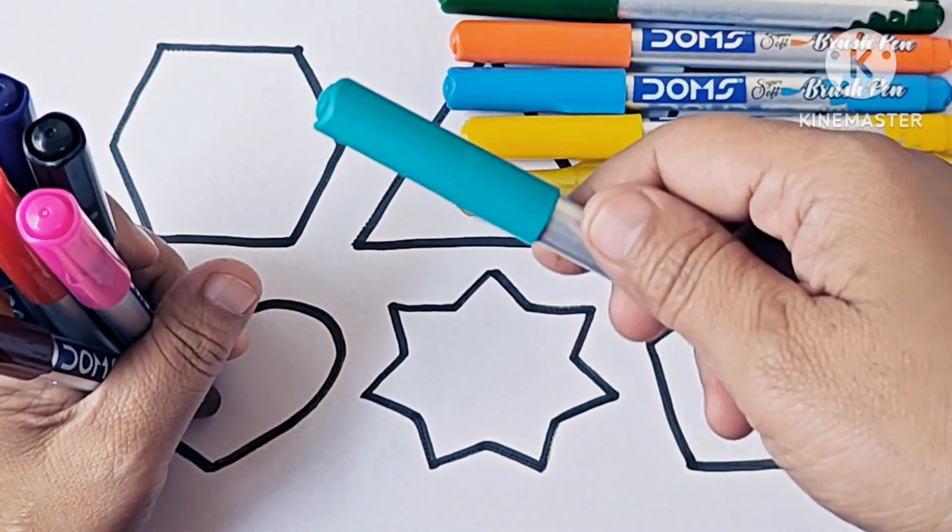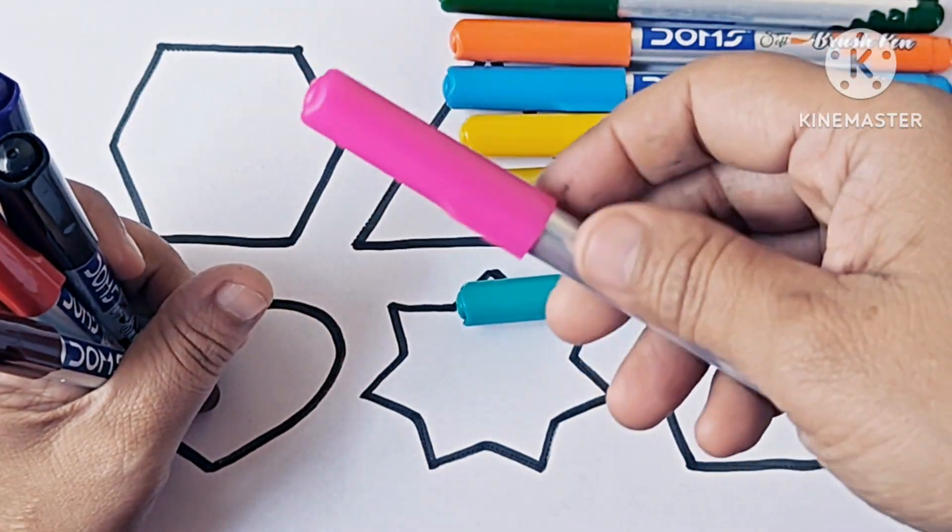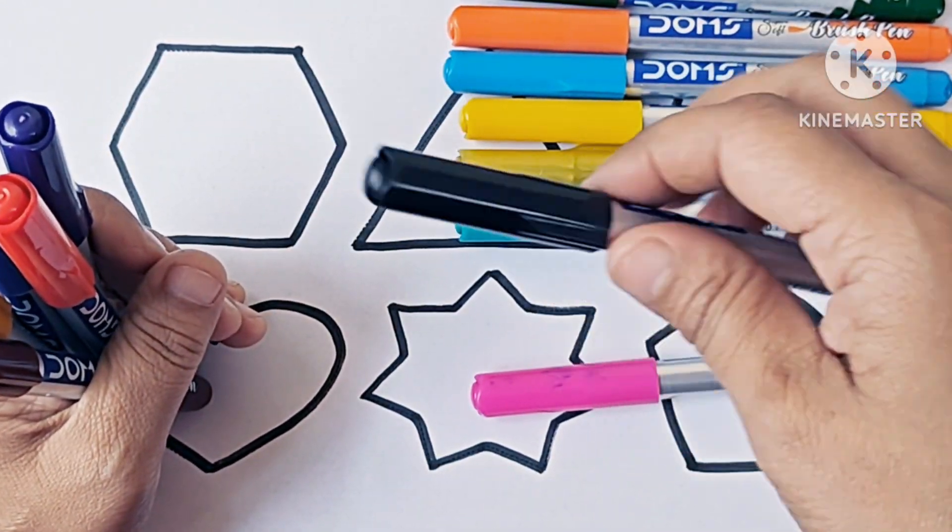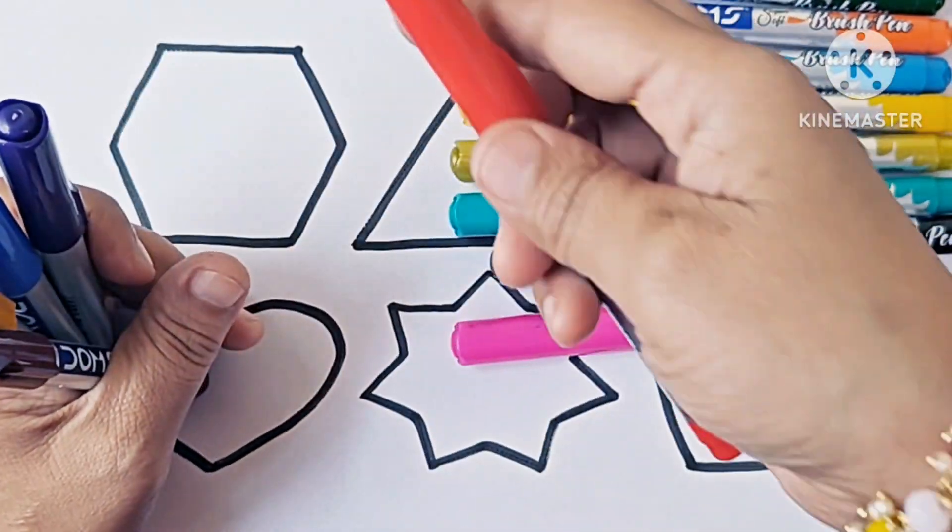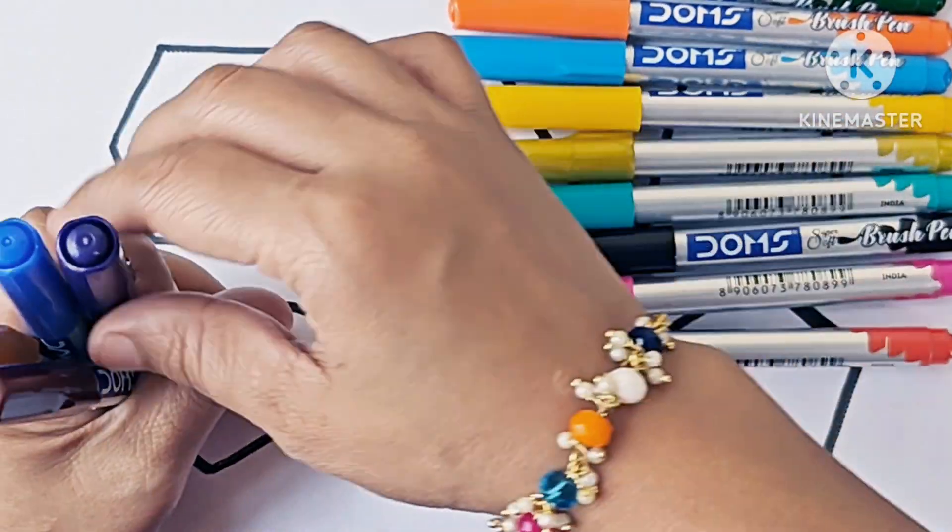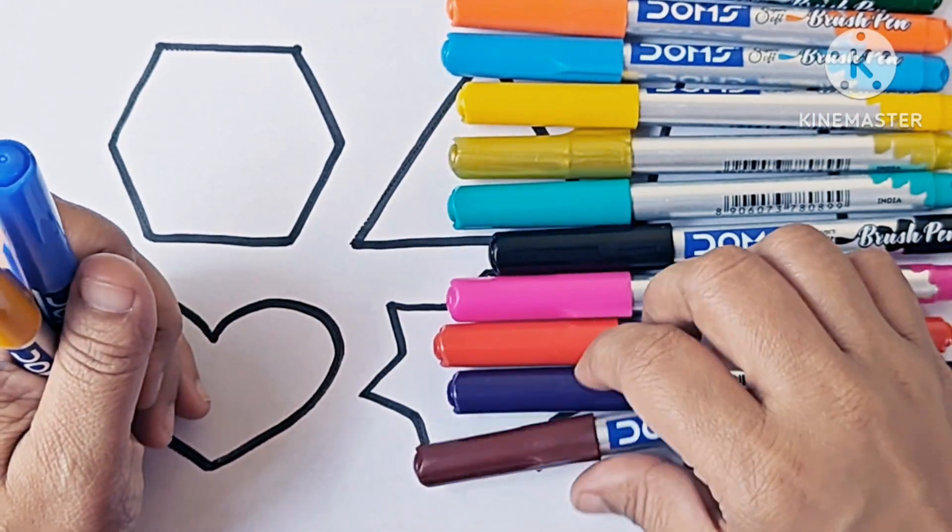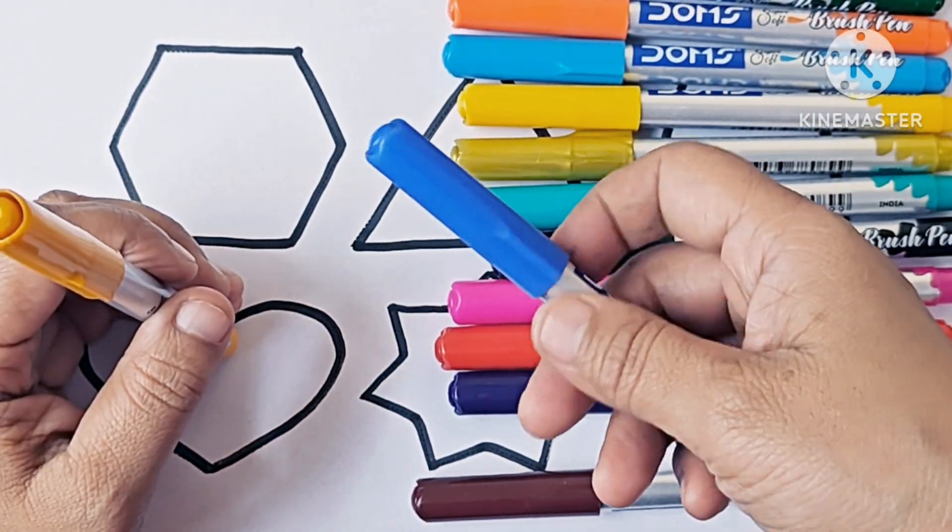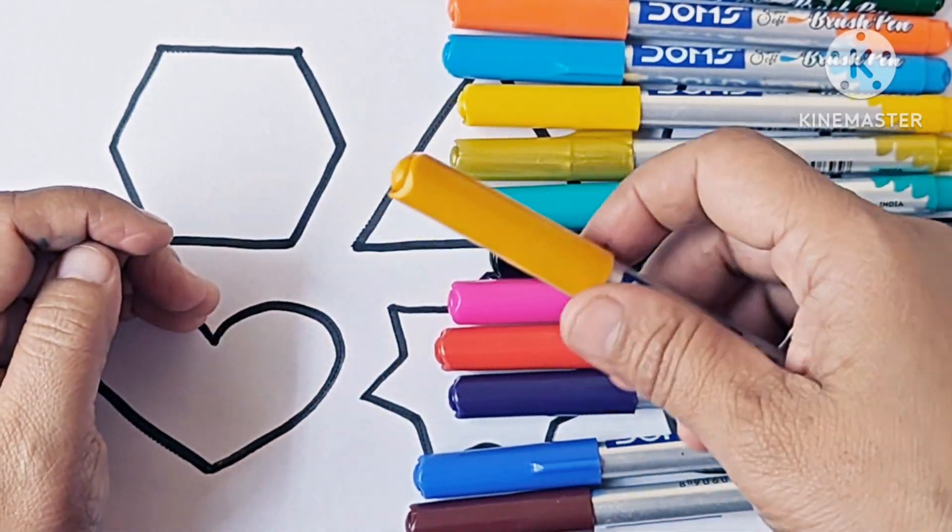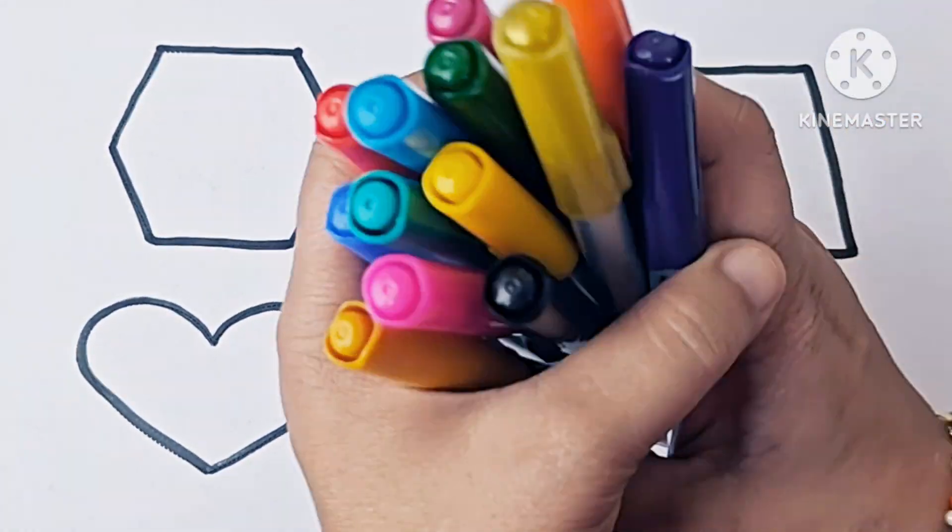Sea green, pink color, black color, red. Violet, brown color, blue color, mustard, mustard yellow. Now we will color the shapes.